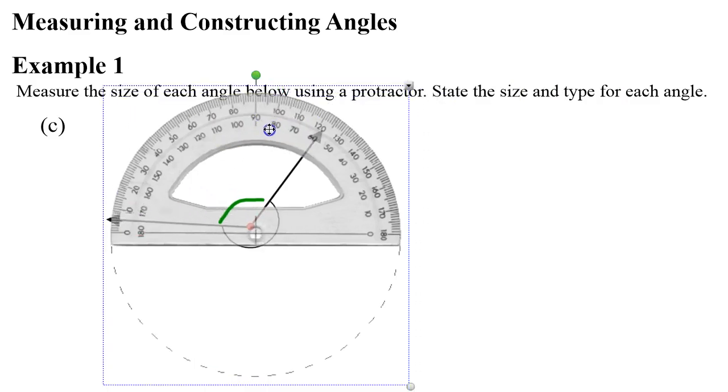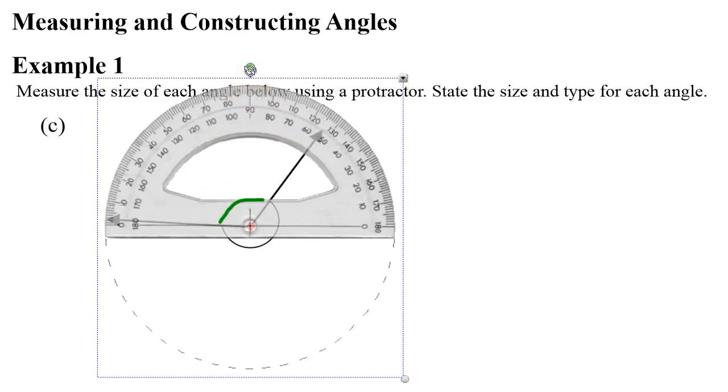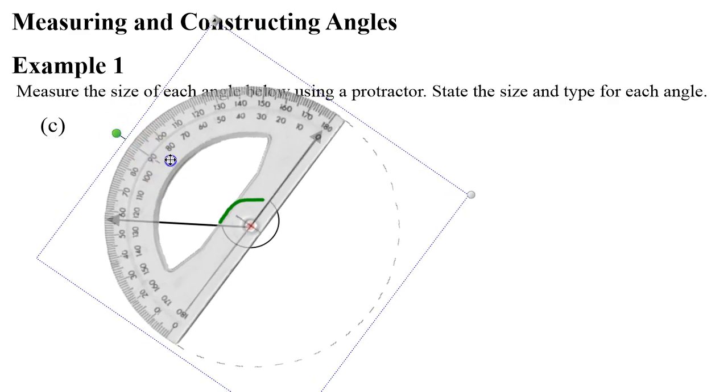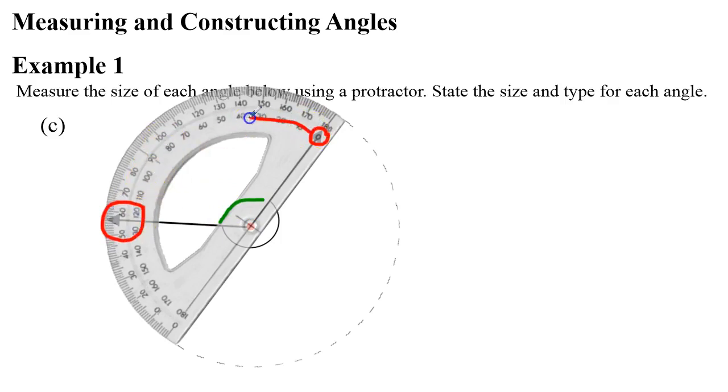So grabbing our protractor, placing it on the vertex, and turning it so it points to zero. Remembering that we need to check which zero the arrow points to, so it's the inside number, not the outside. And the other arrow points in this general direction. Now because we're on the inside of the protractor, we know it's going to be on the inside. So it's going to be 125 degrees.